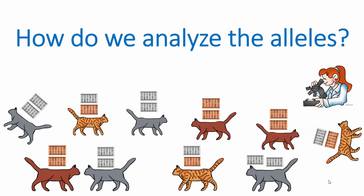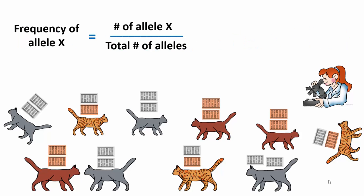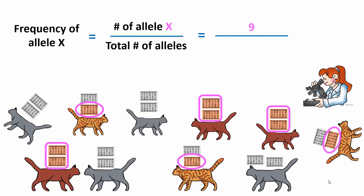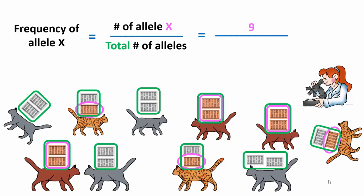So how do we analyze these alleles? Like many problems, it can be solved with an equation, and this one is pretty simple. The frequency of an allele is equal to the number of that allele divided by the total number of alleles in the population. If we count the brown alleles in our population, we get nine. The total number of alleles is always the total number of individuals times two, because each individual carries two alleles. We have ten cats, so that's 20 total alleles. Nine divided by 20 gives us 0.45 — so the frequency of the brown allele is 0.45, meaning 45% of all the alleles in the population are brown.